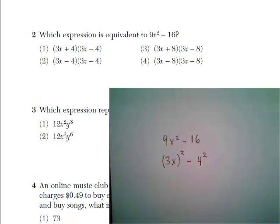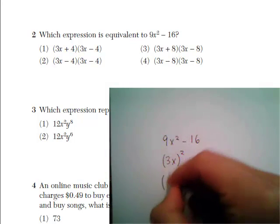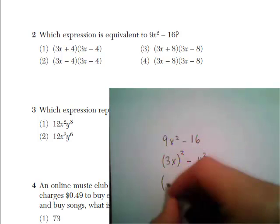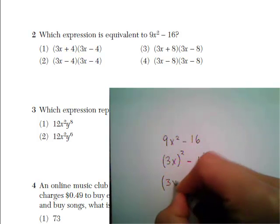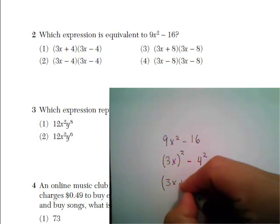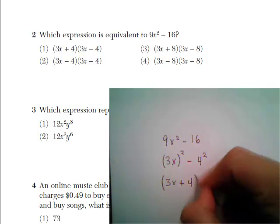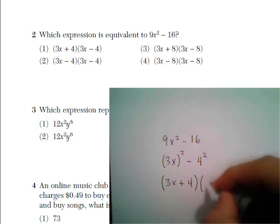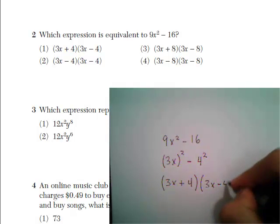And since now we have the difference of two squares, we know our factoring rule for the difference of two squares. It's the first term plus the second term multiplied by first term minus the second term.